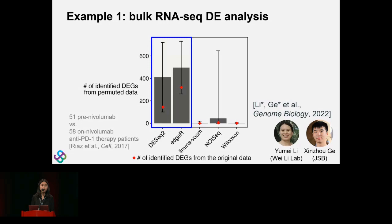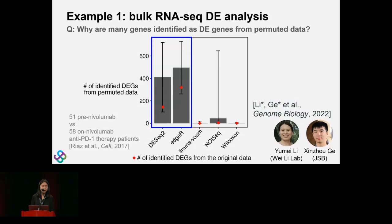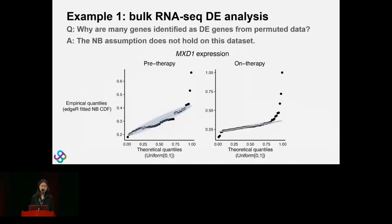To understand why, we randomly permuted the group labels between the two groups — still assigning 51 people into one group and 58 into the other, but with shuffled labels. On these permuted data we ran both methods, and the bar chart shows the average number of DE genes found across permuted datasets. The result was very surprising because we don't expect that many genes to be identified as DE genes from permuted data.